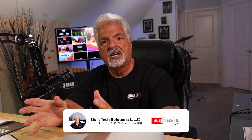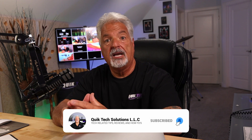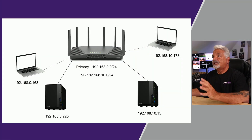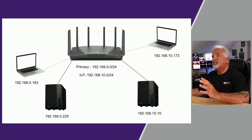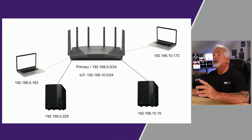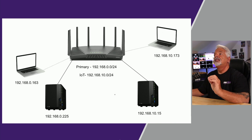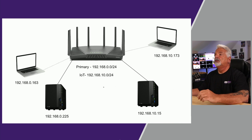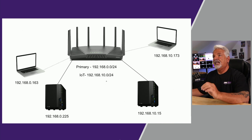In today's video we are going to explore some firewall rules on Synology's SRM 1.3 on the RT6600AX. Looking at this diagram, this is what we're going to be working with - a very basic network. The RT6600AX has two networks: the primary network at 192.168.0.0/24 and the IoT network at 192.168.10.0/24, which is VLAN 10.